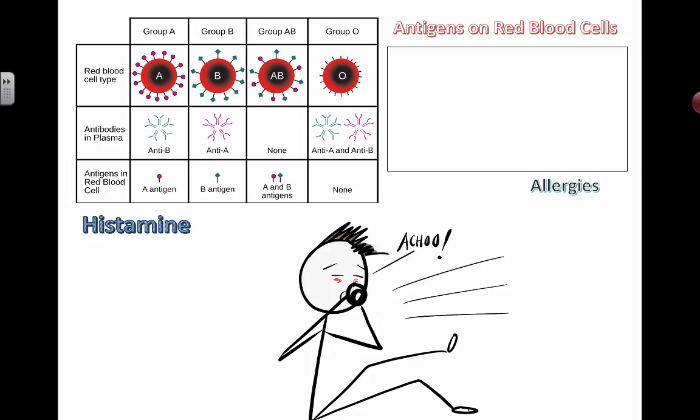Antigens are the protein markers on the surface of bacterial cells, and we produce antibodies against them. It's also important to understand that your own cells have antigens on them. Blood types are a perfect example of this. You've heard of blood types — we have four different blood type groups: blood type A, blood type B, AB, and O.